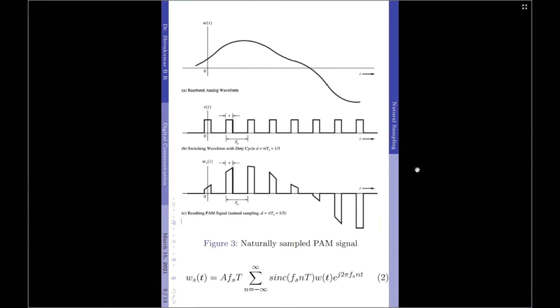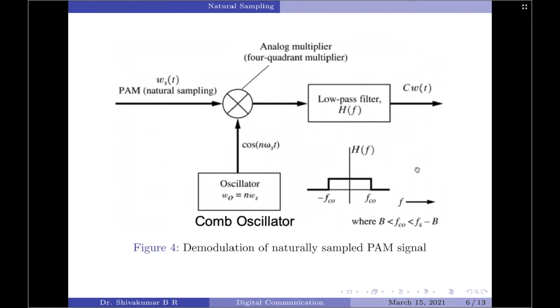Coming back to the demodulation diagram, we see Ĉ_W(t), which is an estimate of the original signal W(t). So, that is about natural sampling.